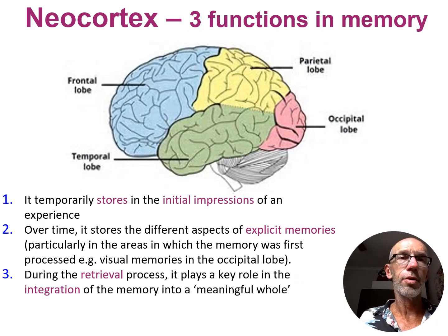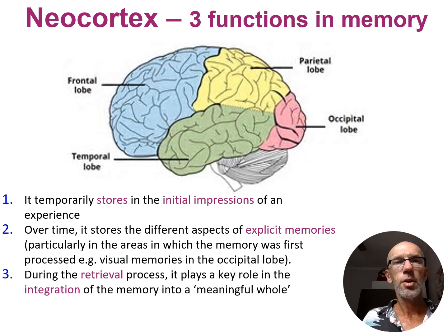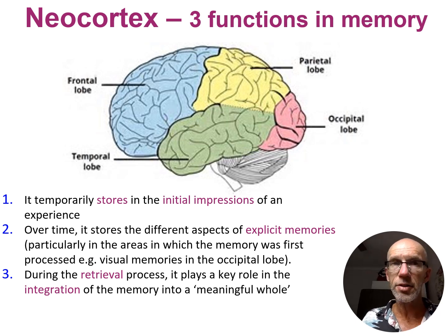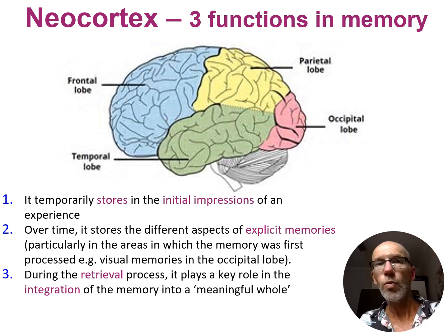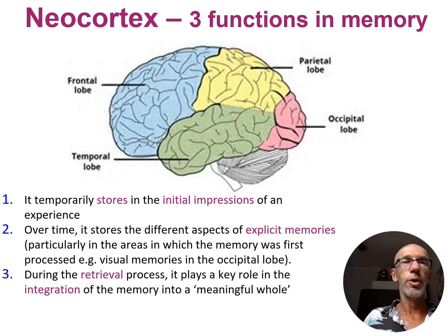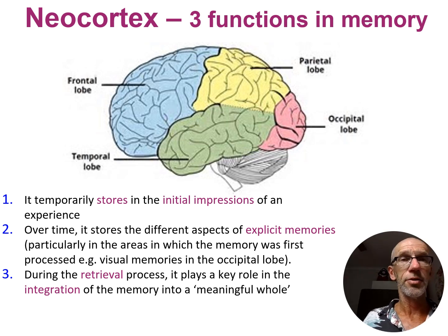Now I want to itemize those three structures and just focus on their role in explicit memory. The neocortex is responsible for the temporary storage of the initial impression of the memory, particularly in the sensory areas — the visual areas, the auditory areas, etc. Then when we have the transfer phase from short-term to long-term, there's some integration between the hippocampus and the amygdala, and neural networks are being formed in the neocortex for the long-term and permanent storage of the explicit details.